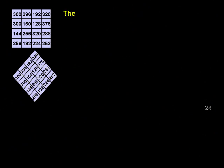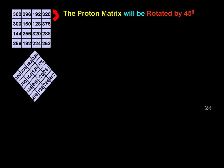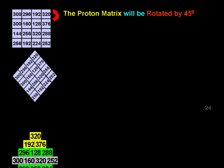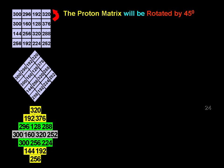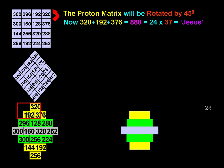The proton matrix will be rotated by 45 degrees. 320 plus 192 plus 376 is 888, which is 24 by 37, the value of Jesus.